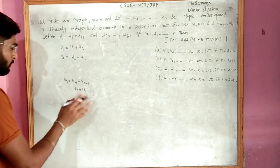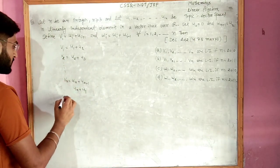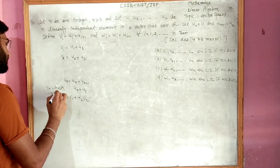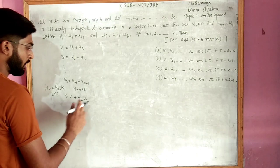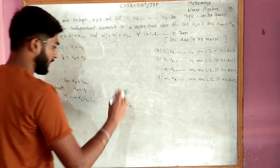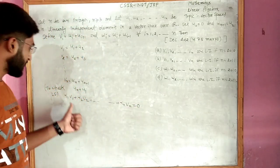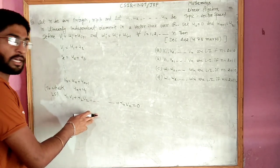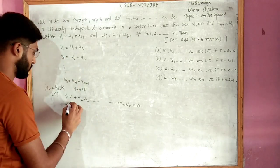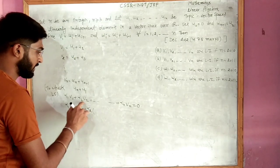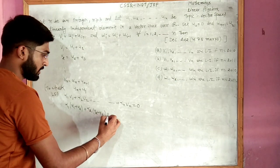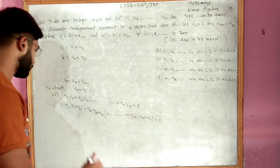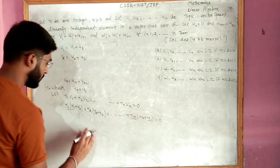To check linear independence, we form alpha1*v1 + alpha2*v2 + ... + alphan*vn = 0 and ask whether all alphai must be zero. Substituting the values of vi, we get alpha1*(u1+u2) + alpha2*(u2+u3) + ... + alphan*(un+u1) = 0.